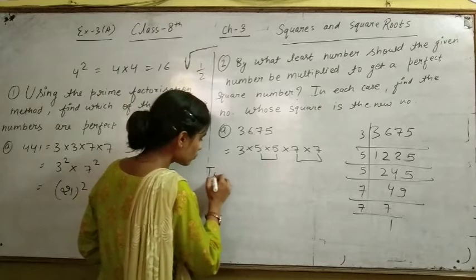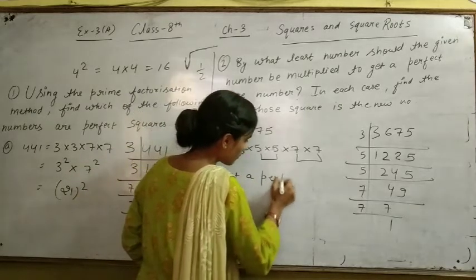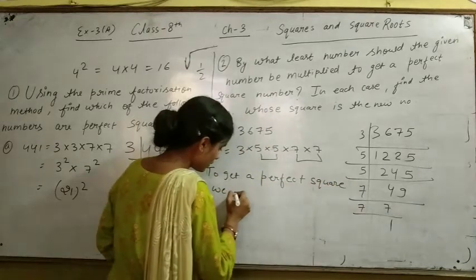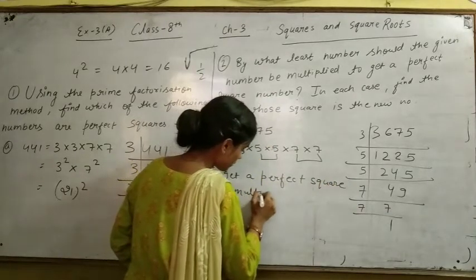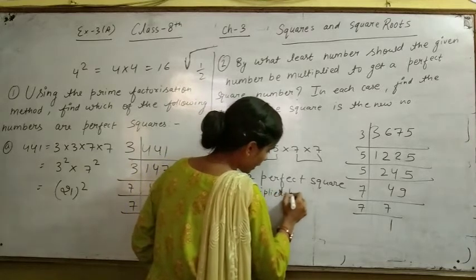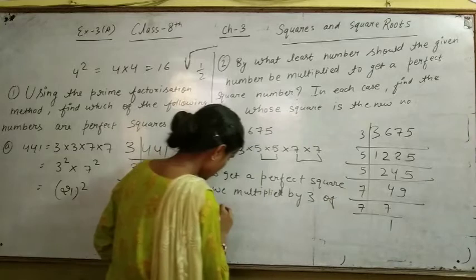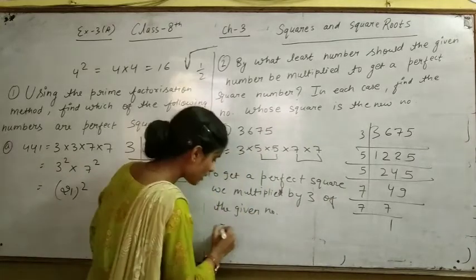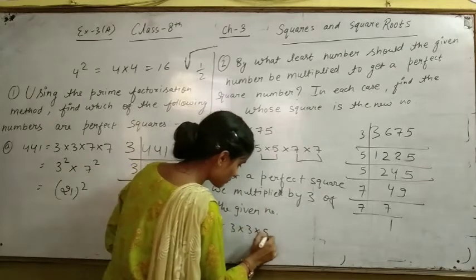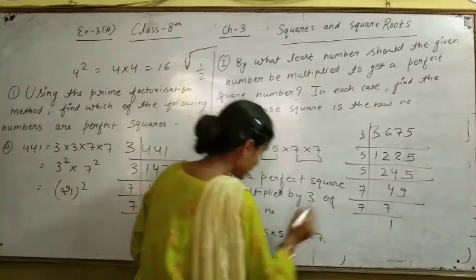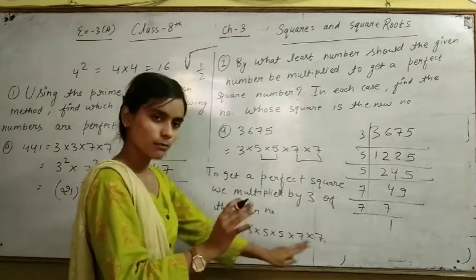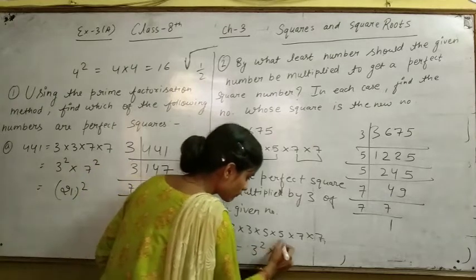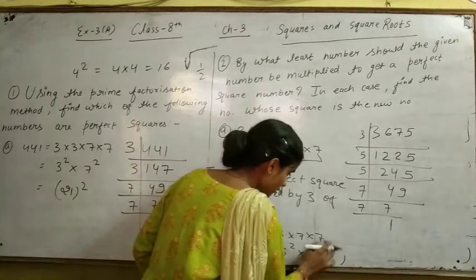And then we are going to get a perfect square by multiplying by 3 of the given number. Now, we have 3 multiplied, we have all the pairs, and we have 3 times 3 times 5 times 5 times 7 times 7.